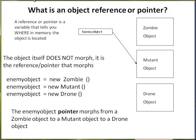Let's morph it again. Enemy object equals new drone. Once again the variable enemy object just changed — it is now pointing to or referencing a drone object. Notice how we have three unique objects but only one enemy object reference variable. It's the enemy object pointer that morphs from a zombie object to a mutant object to a drone object.